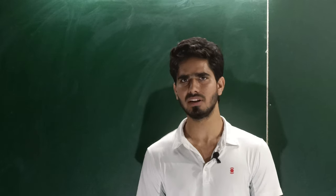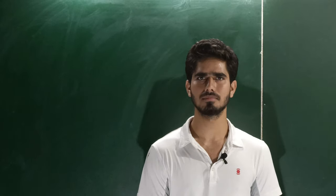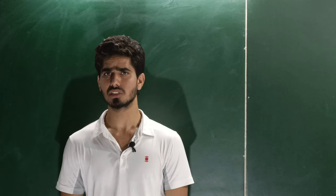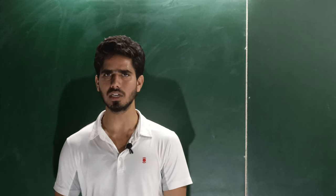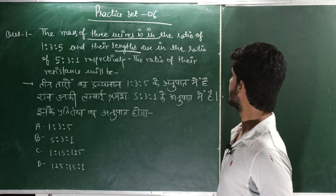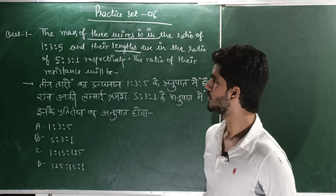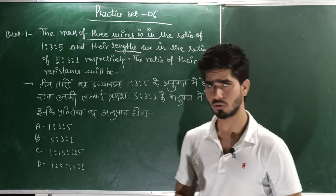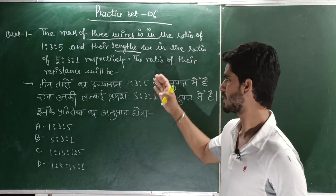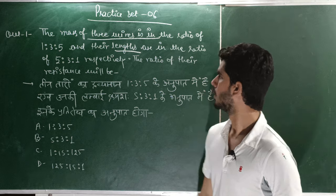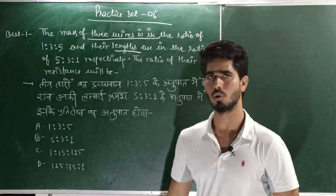Hello everyone, welcome back to the Review Defense Academy. Today we are discussing some important topics related to your upcoming Air Force exam. Question number one: the mass of three wires is in the ratio 1:3:5 and their lengths are in the ratio 5:3:1 respectively. What is the ratio of their resistances? This is an Ohm's Law related question.